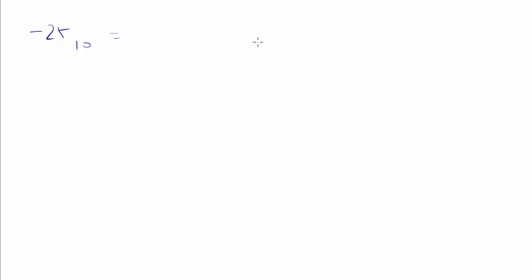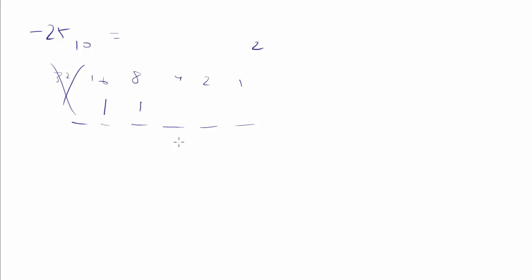So if I take a number like negative 25 in base 10 and want to know what that is in base 2, the first thing I do is figure out the positive value. The place values are 1s, 2s, 4s, 8s, 16s — I don't need 32 because it's too big. I have one 16, and can I get an 8? Yes, that takes me to 24. Then all I need is a 1 to get to 25. So 25 in binary is 1 1 0 0 1.